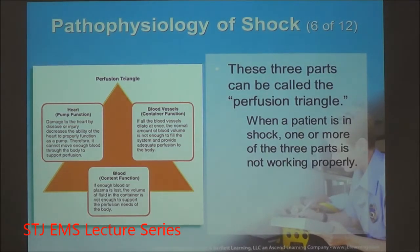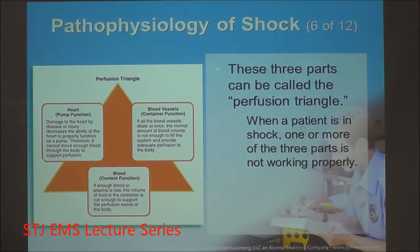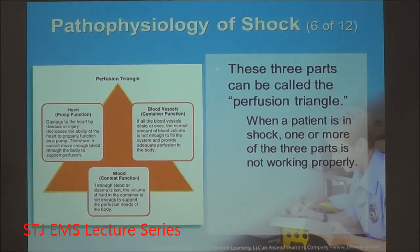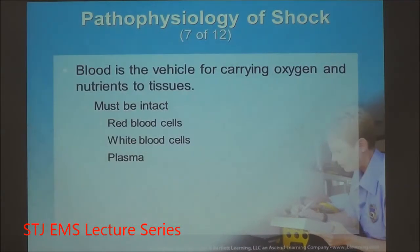The final part of the perfusion triangle is the heart — you've got to have a good pump. Damage to the pump will not allow pressures to be sustained. The primary issue with pump disorder is cardiogenic shock, but this can also be caused by obstructive shock.